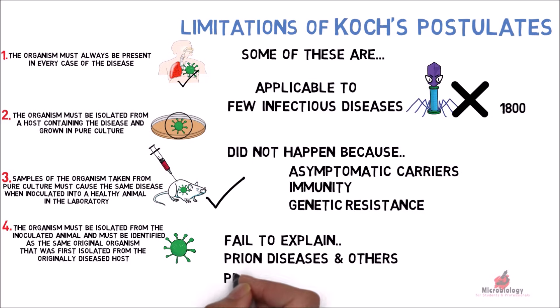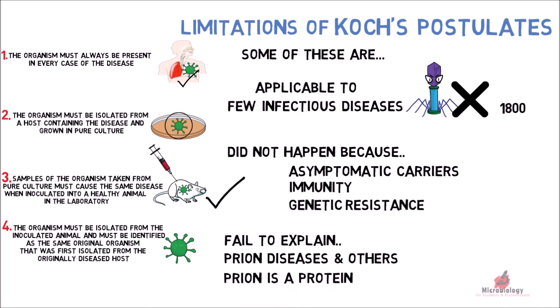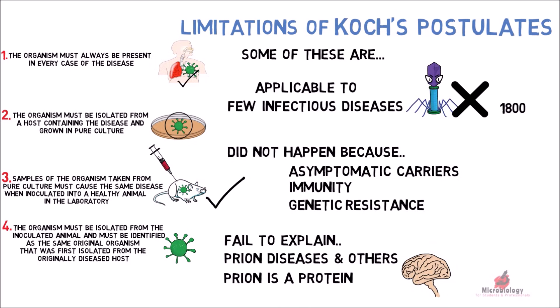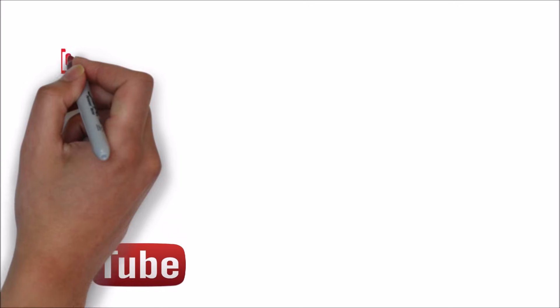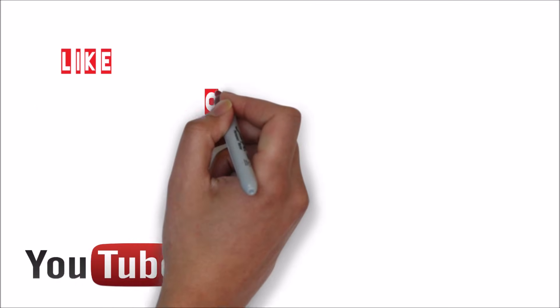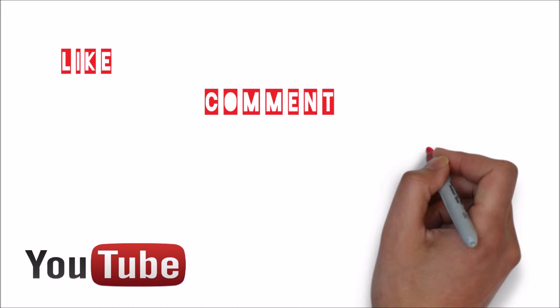For context, a prion is a type of protein that can trigger normal proteins in the brain to fold abnormally. Prion diseases can affect both humans and animals.